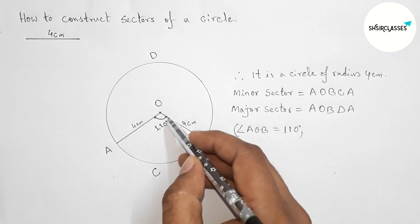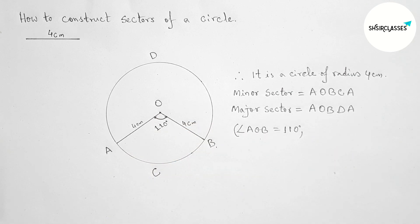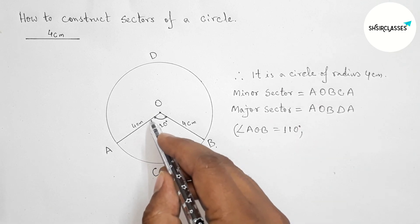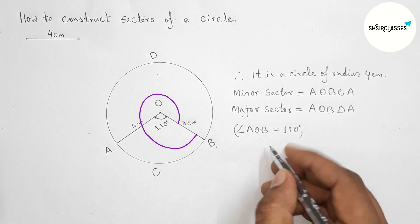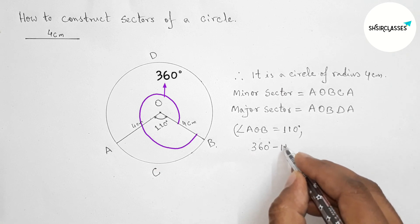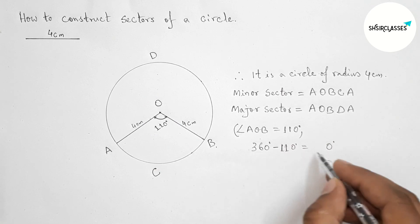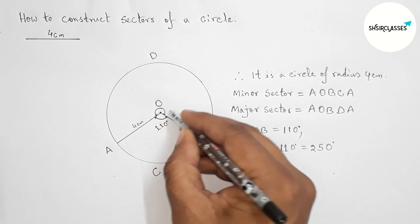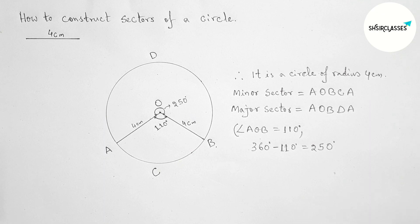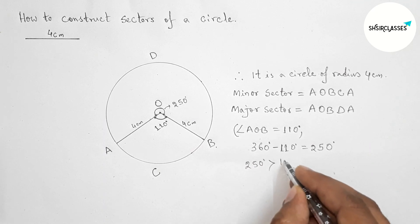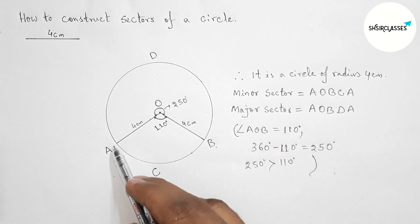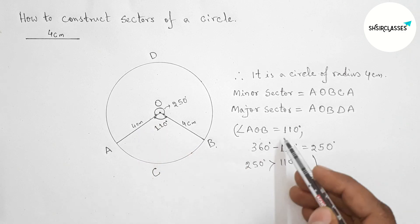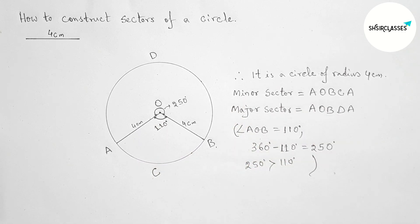Finding the remaining angle: this angle will be 360 minus 110 degrees, because the total angle is 360 degrees and we subtract 110 degrees, giving us 250 degrees. Since 250 degrees is greater than 110 degrees, on the basis of angle we can say that A-O-B-C-A is the minor sector and A-O-B-D-A is the major sector. By this way you can construct sectors of a circle. That's all.